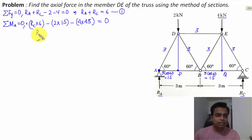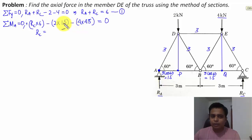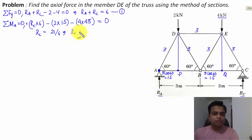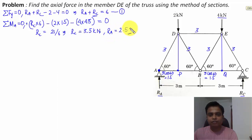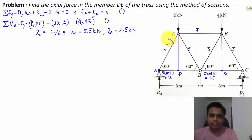Solving the equation: RC times 6 minus 2 times 1.5 minus 4 times 4.5 equals 0, giving RC times 6 = 3 + 18 = 21, so RC = 21/6 = 3.5 kN. Substituting back into Equation 1: RA = 6 minus 3.5 = 2.5 kN. These are our reactions at supports. In the next step we will use the Method of Sections to find the axial force in member DE.